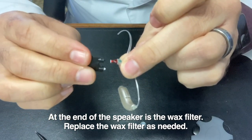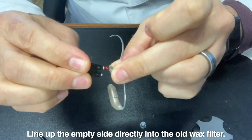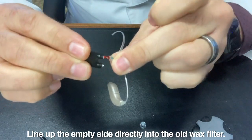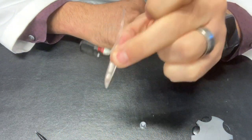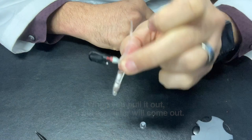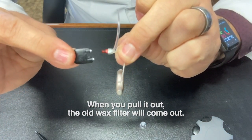You want to line up the empty side directly into the hole. You might even hear it snap. It'll stick in there if you let it. Then when you pull this out, it will take the wax filter with it.